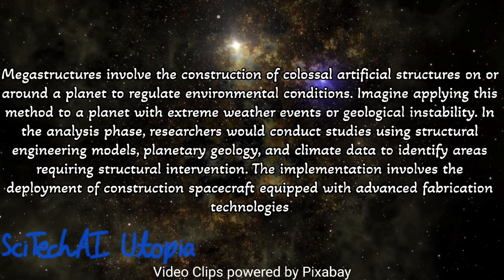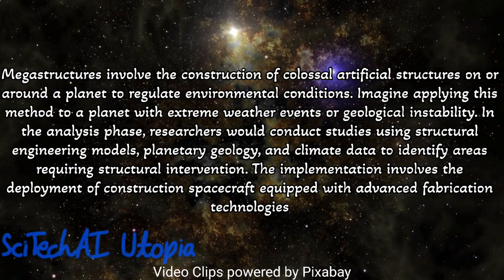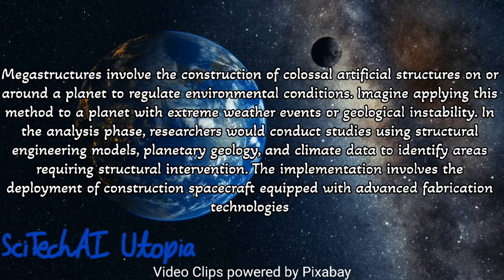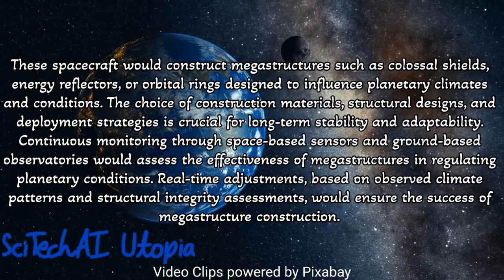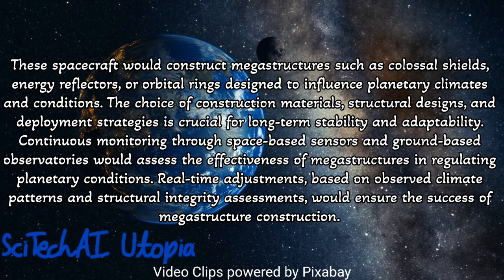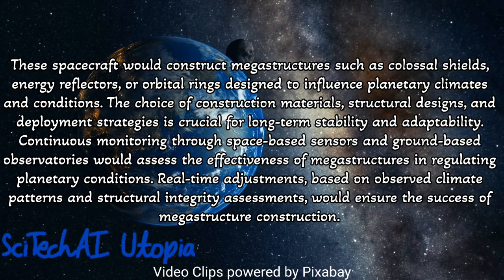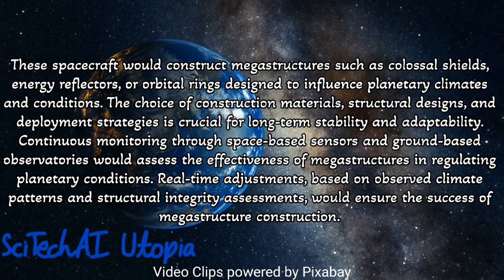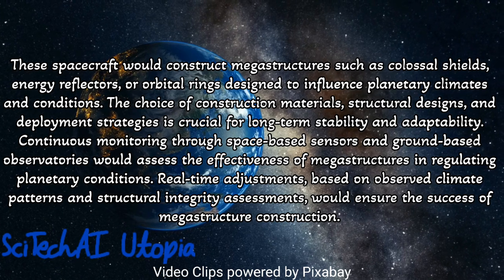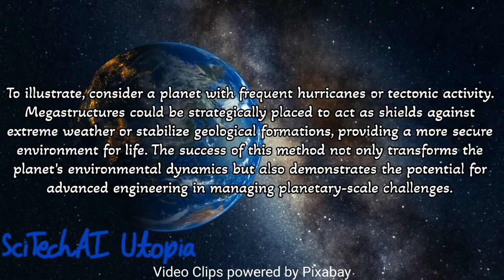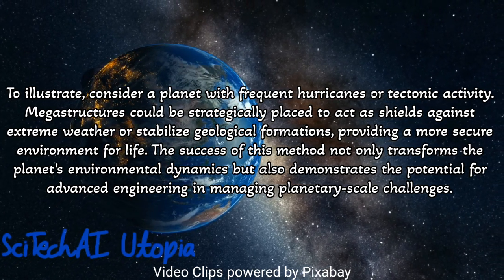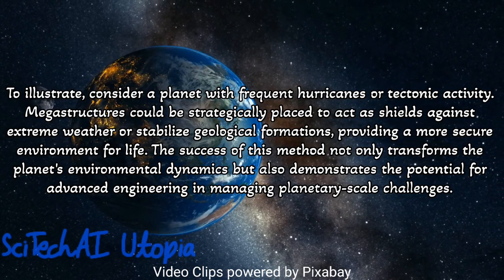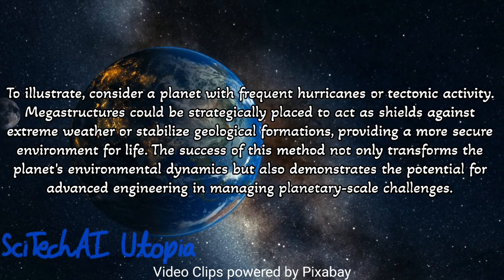Method 27: Megastructures. Conduct a detailed analysis of the target planet's geophysical characteristics, gravitational forces, and atmospheric conditions to inform the design of megastructures. Develop plans for constructing colossal structures such as space-based shields, solar reflectors, or artificial ring systems to influence planetary climate, radiation exposure, or other environmental factors. Implement advanced construction technologies, potentially involving autonomous robotic systems or 3D printing and assembly in space to build megastructures with precision and efficiency. Consider the long-term stability and environmental impact of megastructures, incorporating materials with high durability and resistance to space conditions. Establish a continuous monitoring system to track effects and make real-time adjustments.